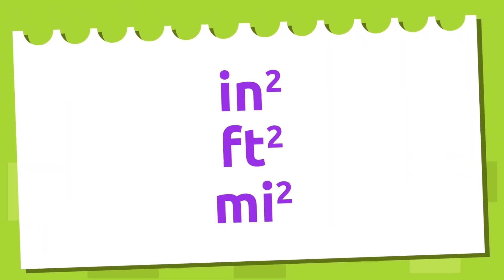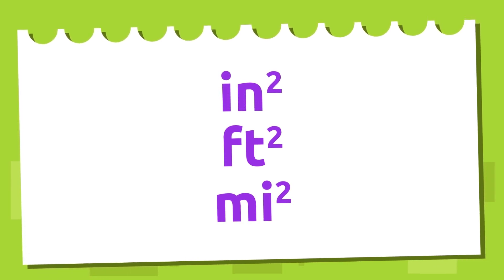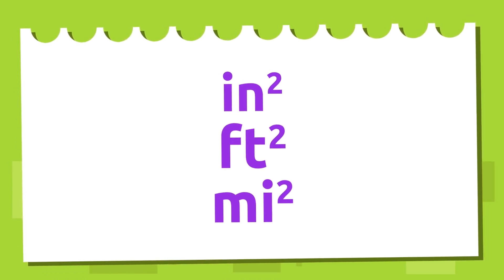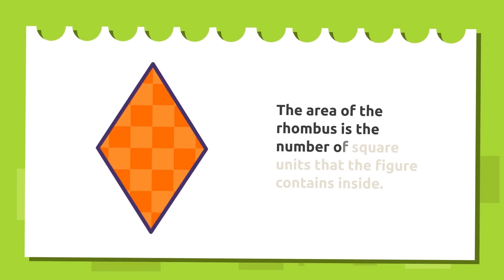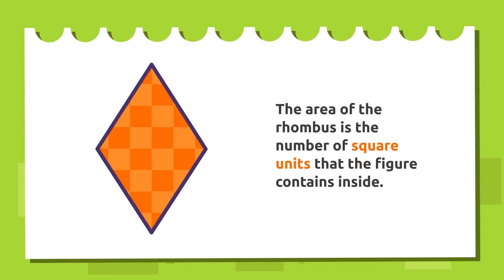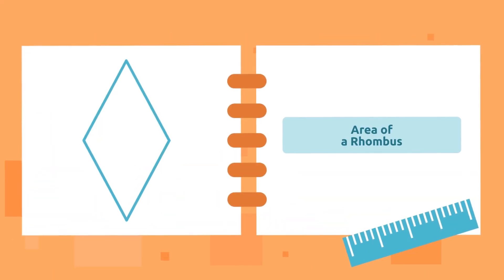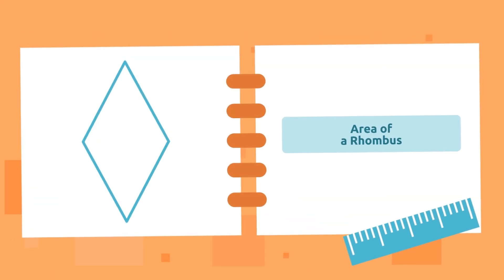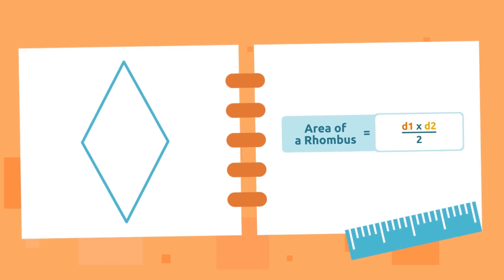Its surface area can be measured in square inches, square feet, square miles, and many other units of measurement. As you can see in this image, the area of the rhombus is the number of square units that the figure contains inside. To calculate the area of the rhombus, we use the following formula.